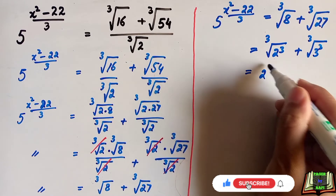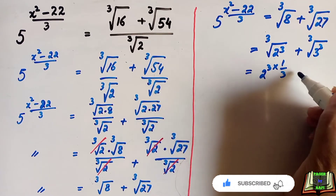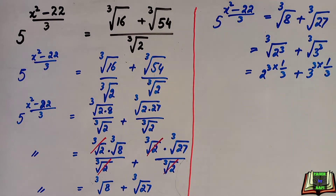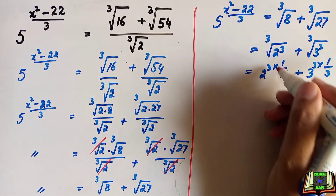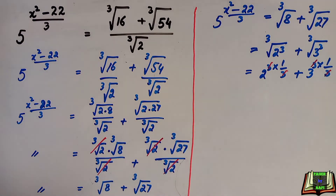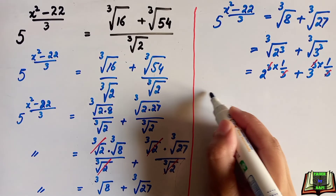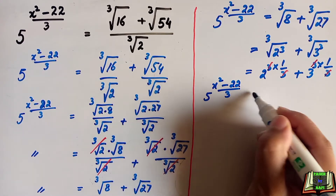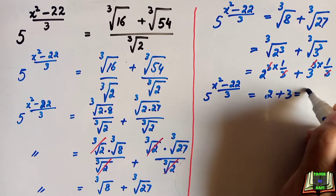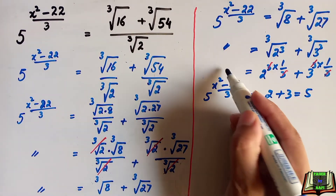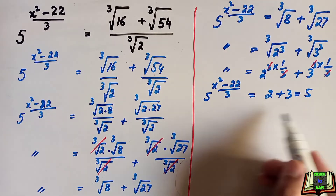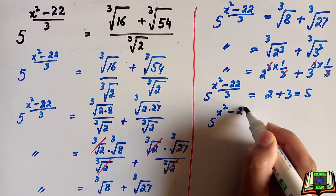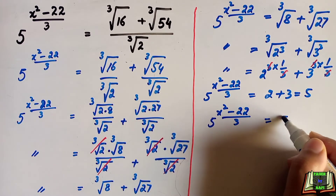We can write this as 2 to the power 3 times one-third, plus 3 to the power 3 times one-third. The 3s cancel out, leaving 2 plus 3 equals 5. So we have 5 to the power x squared minus 22 divided by 3, equal to 5, which we write as 5 to the power 1.